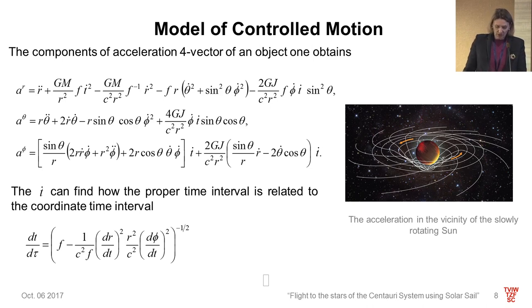By introducing the spherical coordinates of the spacecraft, we write the full momentum of the solar sail, where tau is the proper time measured in the frame of reference of the solar sail. For the components of the acceleration vector of an object, we obtain the following equations. The derivative of T to tau can be found as how the proper time interval is related to the coordinate time interval.